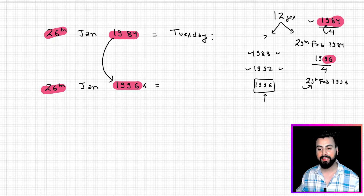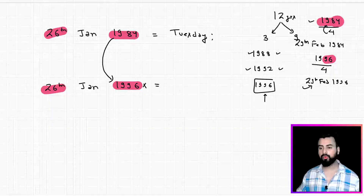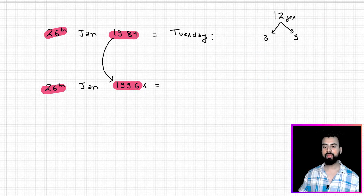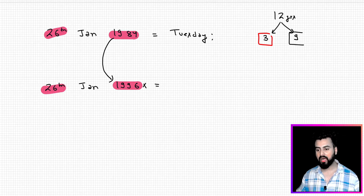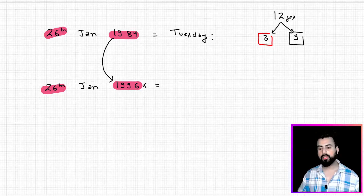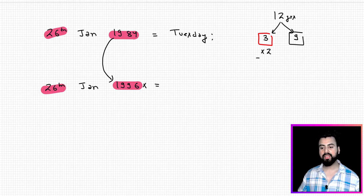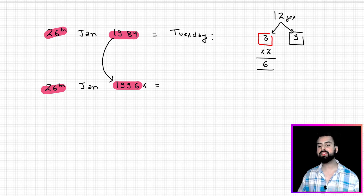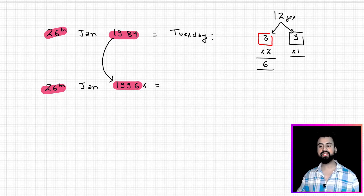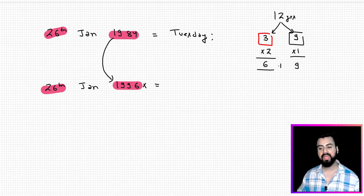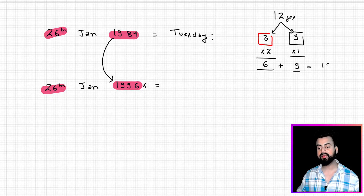So out of 12 years, three are leap years — 1984, 1988, and 1992 — and the remaining nine are ordinary years. In a leap year the number of odd days is two, so three leap years give six odd days. In an ordinary year it's one odd day, so nine ordinary years give nine odd days. Adding them together gives a total of 15 odd days.